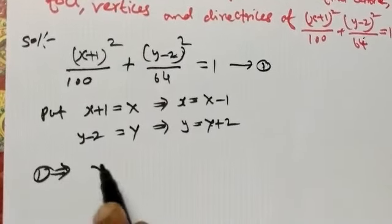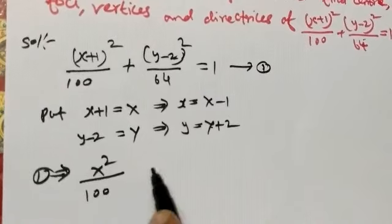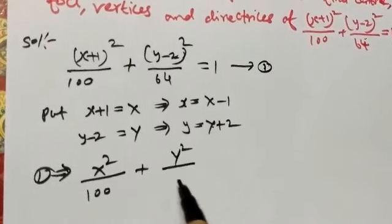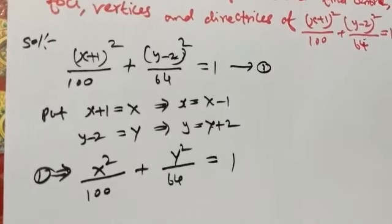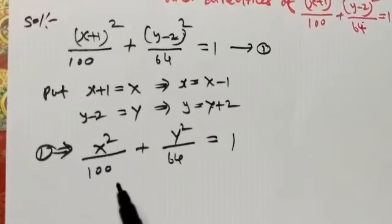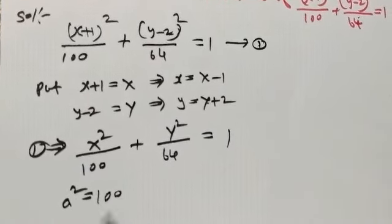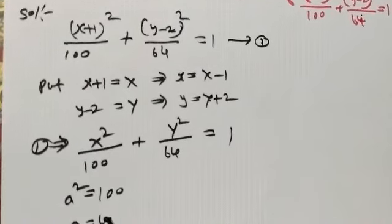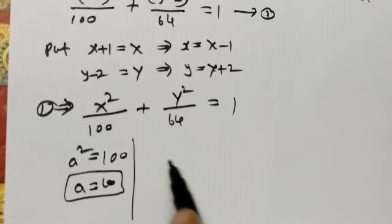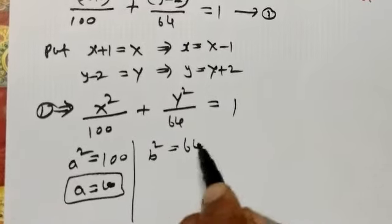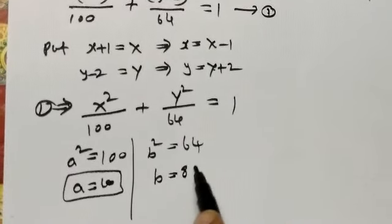Now we substitute: X²/100 + Y²/64 = 1. The biggest number is a² = 100, so a = 10. The smallest value is b² = 64, so b = 8.